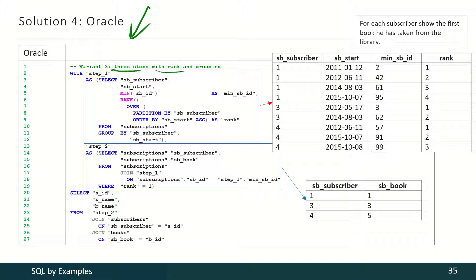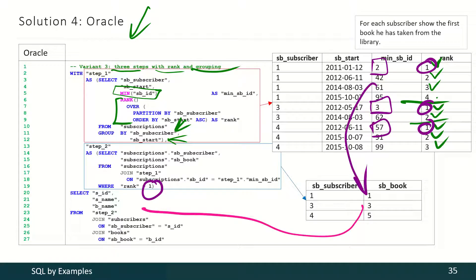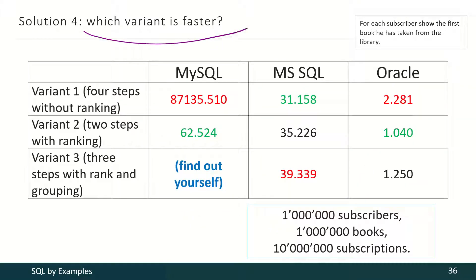With the final approach for Oracle, we may use three steps with ranking and grouping. For each subscriber and simultaneously for each date, we find the minimal value of subscription ID. Then for each subscriber we rank his visits to the library — first visit, second visit, third visit, and so on. Then we use only the first visits of each subscriber, and knowing those subscription IDs we transform them into book IDs, and knowing those book IDs we transform them into book titles. And that's all.